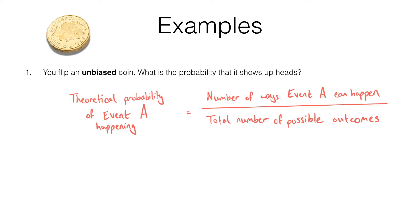This formula is really a lot simpler than it looks. The probability that the coin will show up heads is the number of ways that event can happen — the only way is if the coin shows up heads, so there's only one way. That gives us 1 over the total number of possible outcomes, which is two. So the probability is simply 1 over 2.